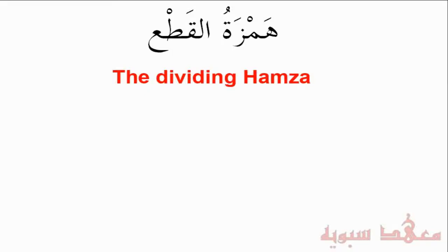We're going to speak about Hamzatul Qat'a, which translated means 'The Dividing Hamza.' Qat'a literally means 'To Cut,' and we'll find out why it has this name. But before we talk about it, what is its sign?